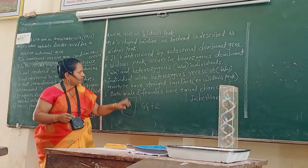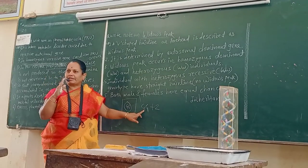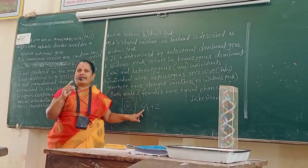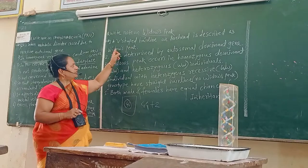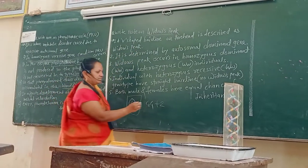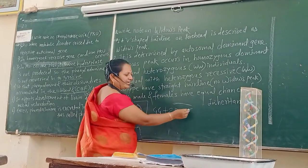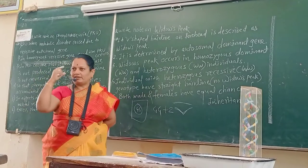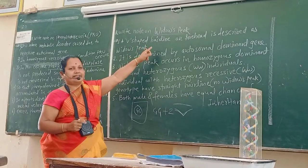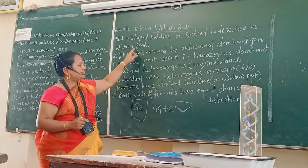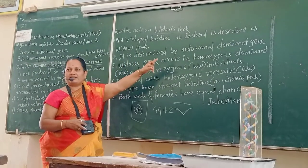Look here, all of you. When autosomal chromosomes transfer some type of traits — that is, autosomal traits — an example is widow's peak. Widow's peak: some persons have straight hair, but some persons have a widow's peak, like a V-shape at the front of the forehead. This type of hair is described as widow's peak. It is determined by an autosomal dominant gene.